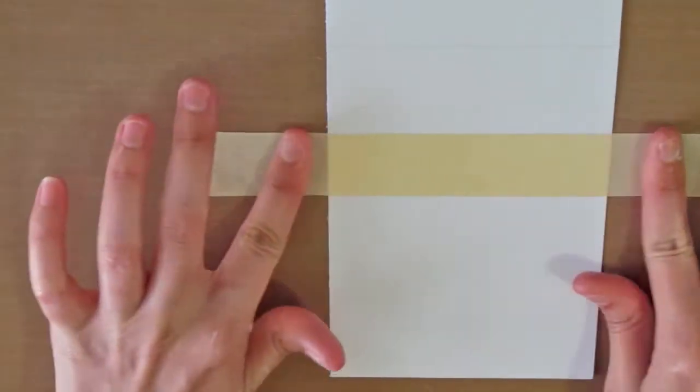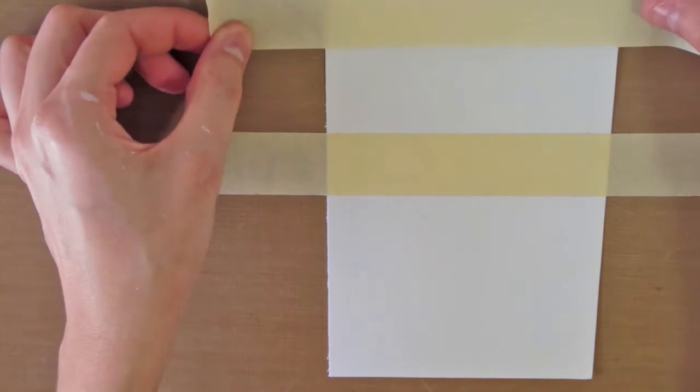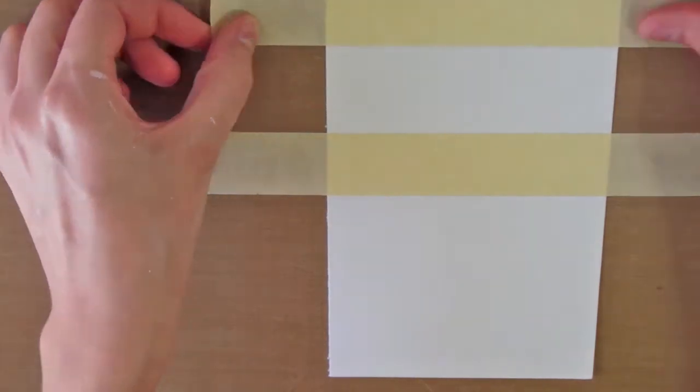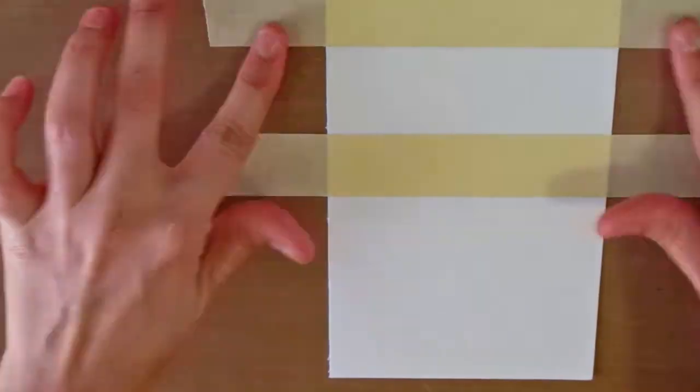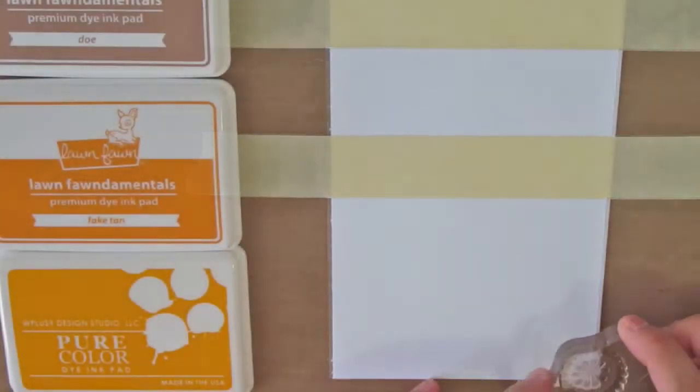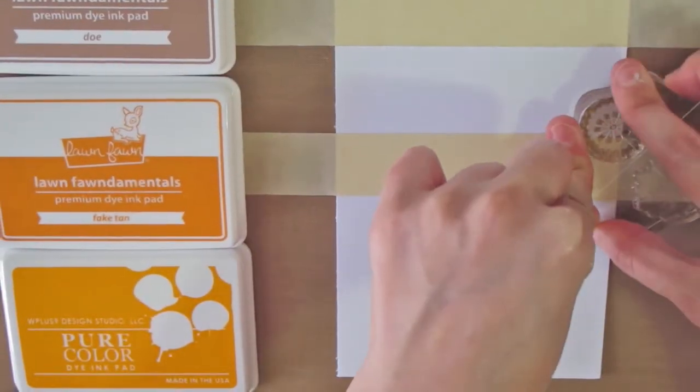For this card, I wanted to use the autumn colors brown, orange and yellow. So I chose the Lawn Fawn ink pads in Doe and Fake Tan and the pure color ink pad from WPlus9 in Wild Mango.